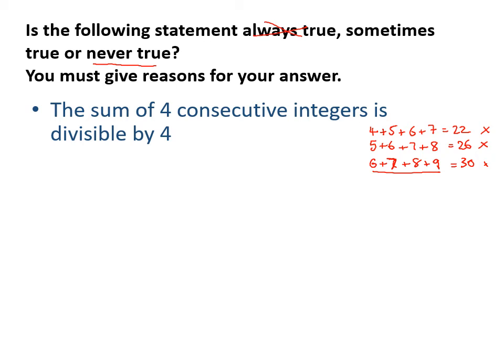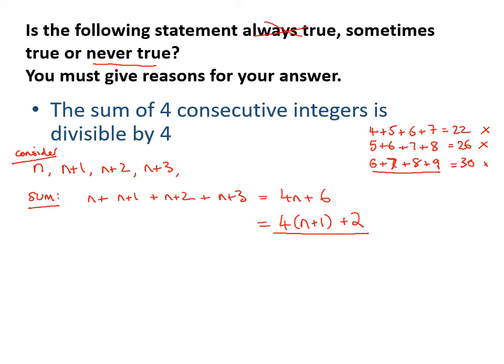Let's see if we can prove it algebraically though. So if we start off with n, so consider, it's always a good word to use, consider n, n plus 1, n plus 2, n plus 3, there's my four consecutive integers. So if I add them together, the sum of those, n plus n plus 1, plus n plus 2, plus n plus 3, would be 4n plus 6. If I now factorize out 4, I can write this as 4 times n plus 1, plus 2. And I can see from here that this is always a multiple, sorry, always 2 more than a multiple of 4.